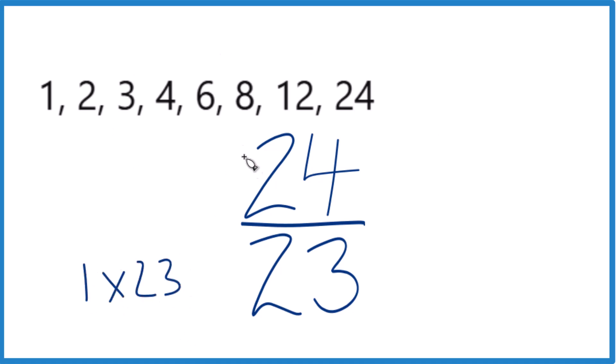So when we look for the greatest common factor here, there's no 23, just 1. Divide 24 by 1, you get 24. Divide 23 by 1, and you get 23. So that's the best we can do. It's already simplified.